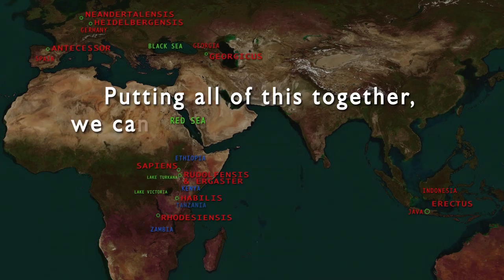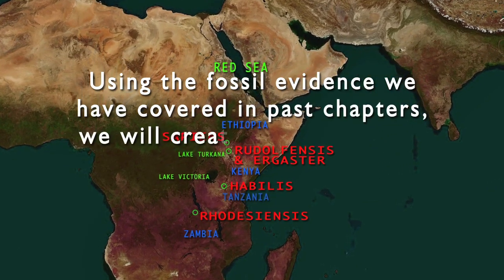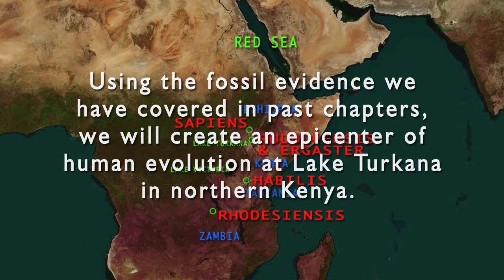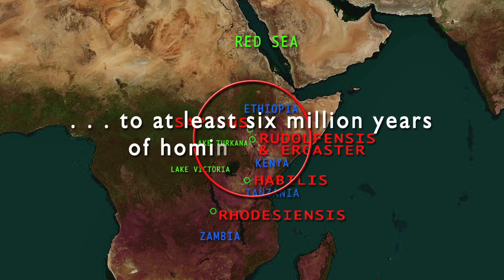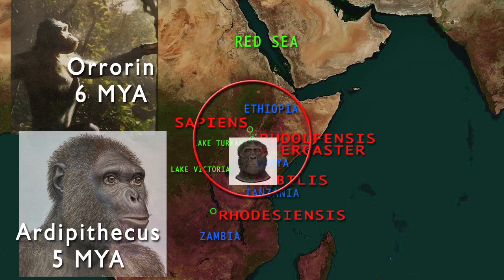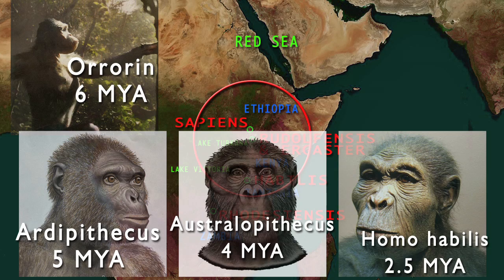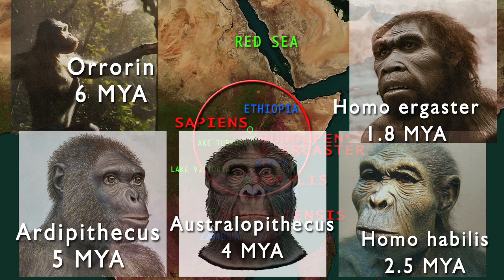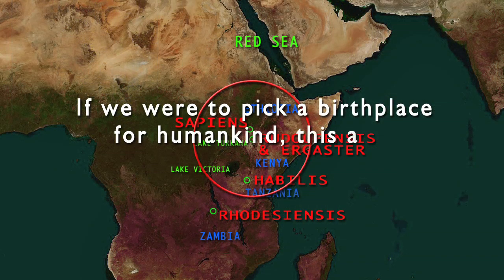Putting all of this together, we can create a general overview of the evolution and spread of the genus Homo. Using the fossil evidence, we create an epicenter of human evolution at Lake Turkana in northern Kenya. Inscribing a circle with a radius of about 700 miles, we encompass a large area of the Great Rift Valley, which has witnessed at least six million years of hominin evolution — from Orrorin tugenensis in the Tugen Hills of Kenya to Ardipithecus in the Awash River Valley of Ethiopia, to Australopithecus finds in Ethiopia, Kenya, and Tanzania, to Homo habilis in Olduvai Gorge, to Homo ergaster near Lake Turkana, and up to the oldest known Homo sapiens fossils in southern Ethiopia. There is no other area on earth that offers such a rich and continuous hominin fossil record.